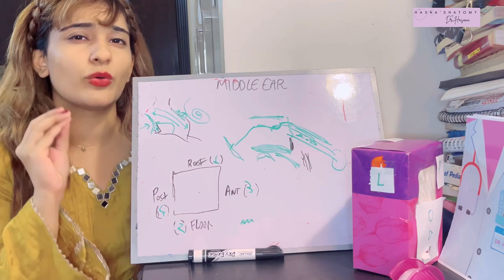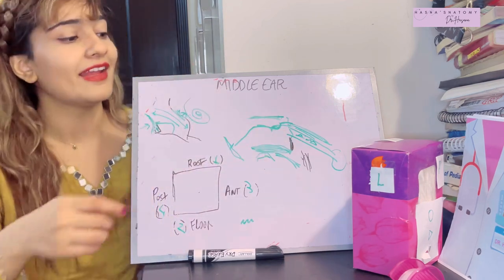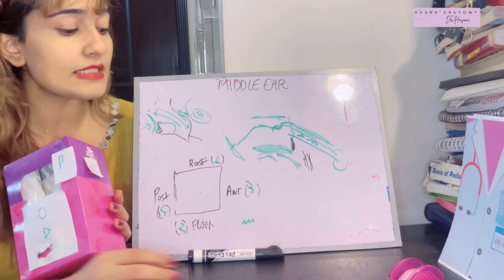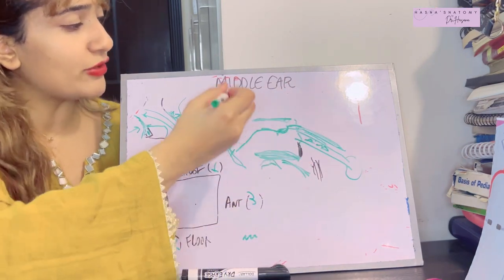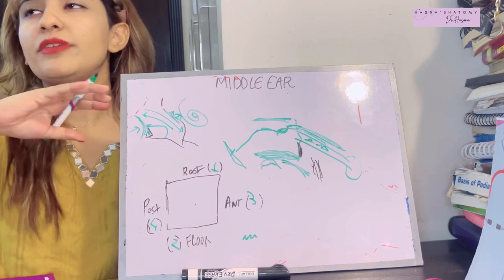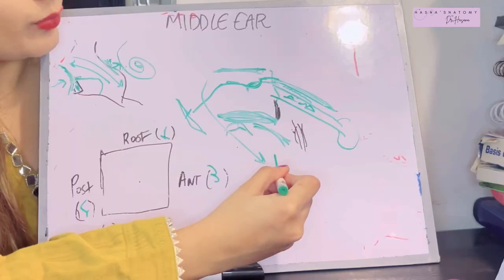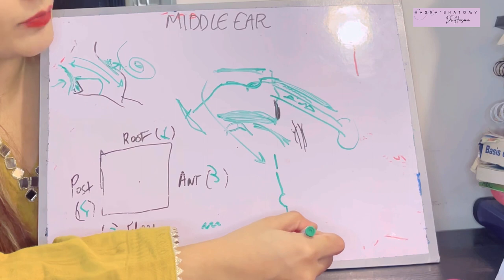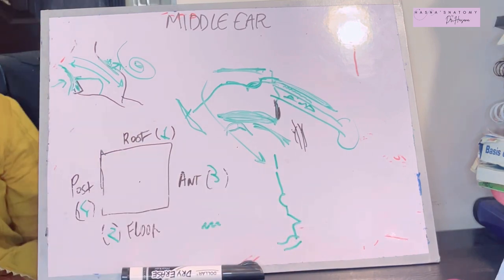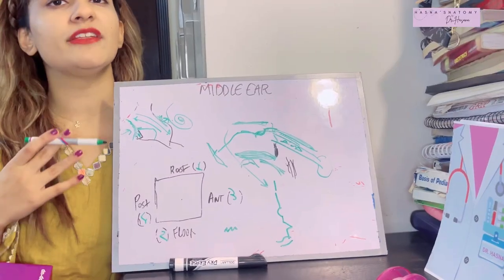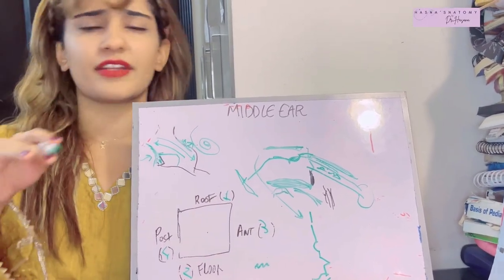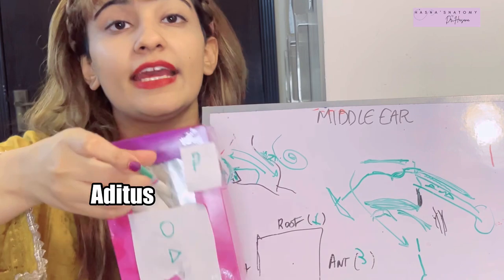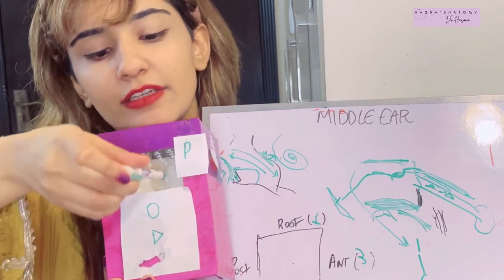The posterior wall has four contents. To remember them, note that the posterior wall has one of everything: an opening, a fossa, a projection, and a canal. The first content is the aditus — an opening that leads to the mastoid bone. Within the mastoid bone is the mastoid antrum, a space containing air cells, and the aditus lies in the superior part of the posterior wall.